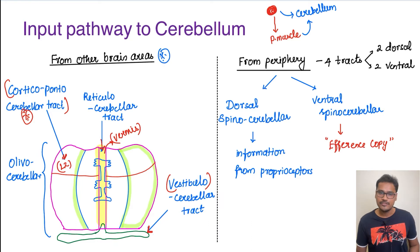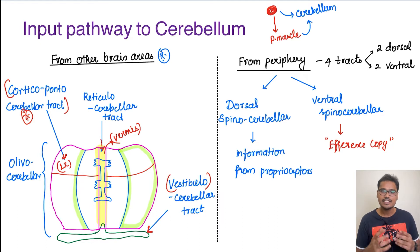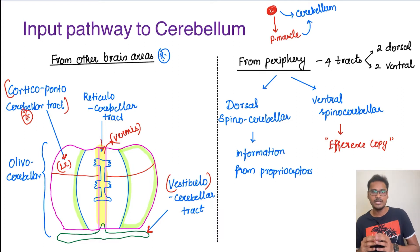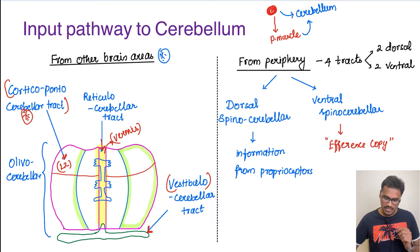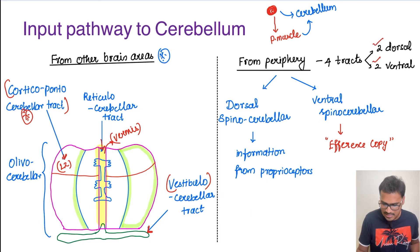Coming to the impulses from the periphery — two things are important. First, the ongoing action being performed has to be reported to the cerebellum to compare with the blueprint. Second, the position of the body has to be constantly told to the cerebellum so it can alter the movement. If the body's posture changes, that information must be sent to the cerebellum. This is done with the help of two dorsal tracts and two ventral tracts.